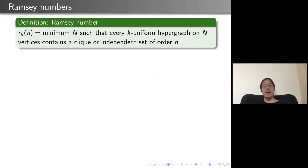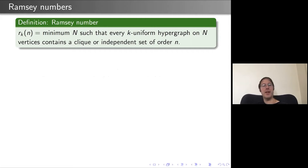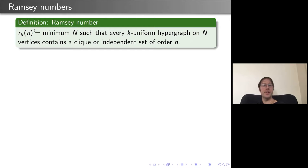What are Ramsey numbers? The Ramsey number R_K(n) is the minimum N such that every K-uniform hypergraph on N vertices contains a clique or independent set of order n. Your edges are unordered K-tuples of vertices, and you get a subset of size n where all N-choose-K K-tuples are edges or none of them are.